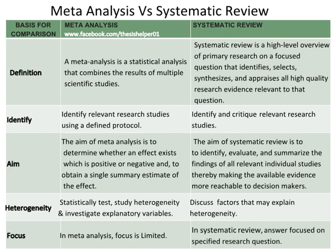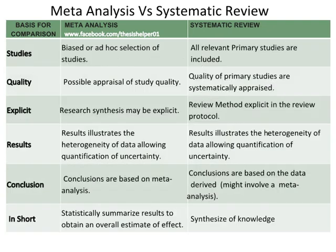In meta-analysis, focus is limited. Whereas in systematic review, the answer is focused on a specified research question. In meta-analysis, there may be biased or ad hoc selection of studies. Whereas in systematic review, all relevant primary studies are included.